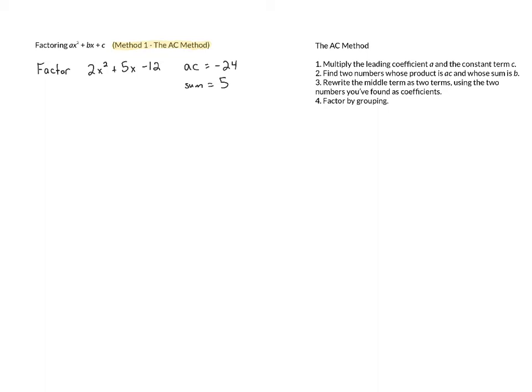The nice thing about this is we've already played this game before. When we were using unfoiling, we were looking for two numbers with a certain product and a certain sum. So at this point, we should have good practice with this, and we should be able to see that those numbers are going to be positive 8 and negative 3. They multiply to negative 24 and add up to 5.